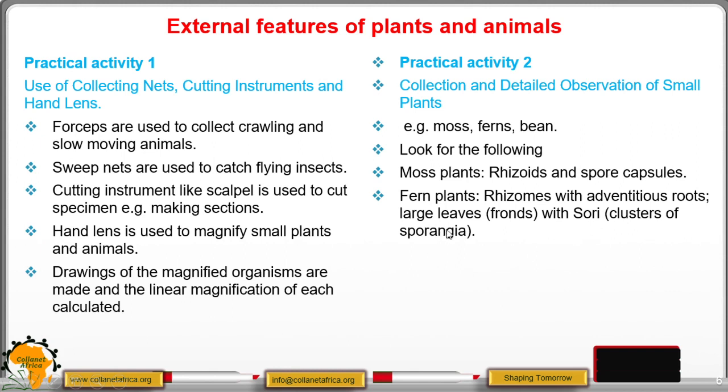Sori are a group of sporangia which contain spores, and the spores which are found in these sori or sporangia are the ones that are involved in reproduction. Remember when these sori land on a suitable ground, they also grow into new plants.